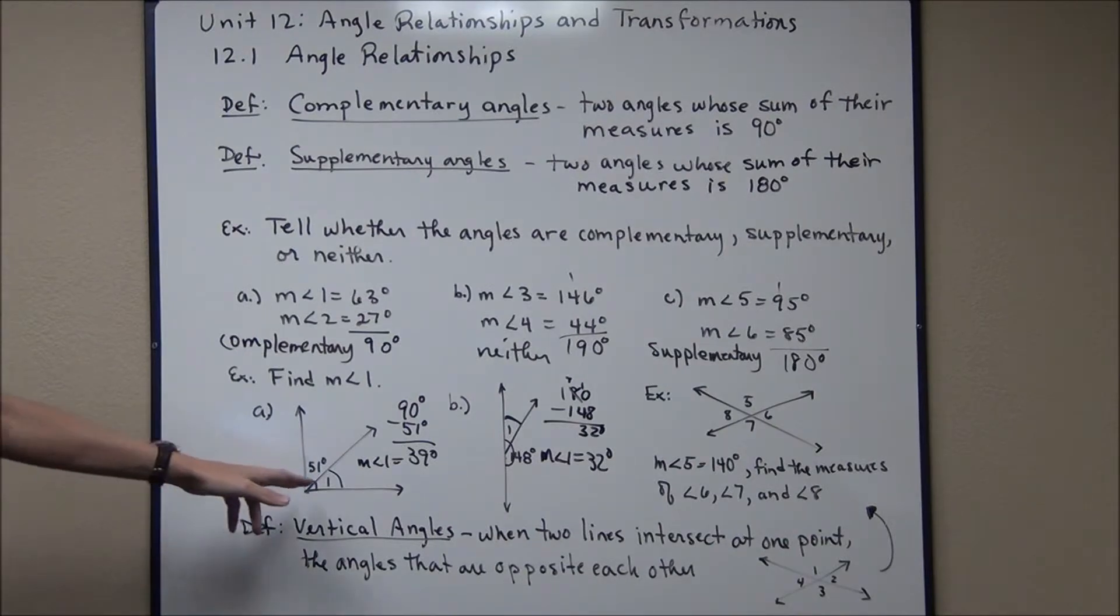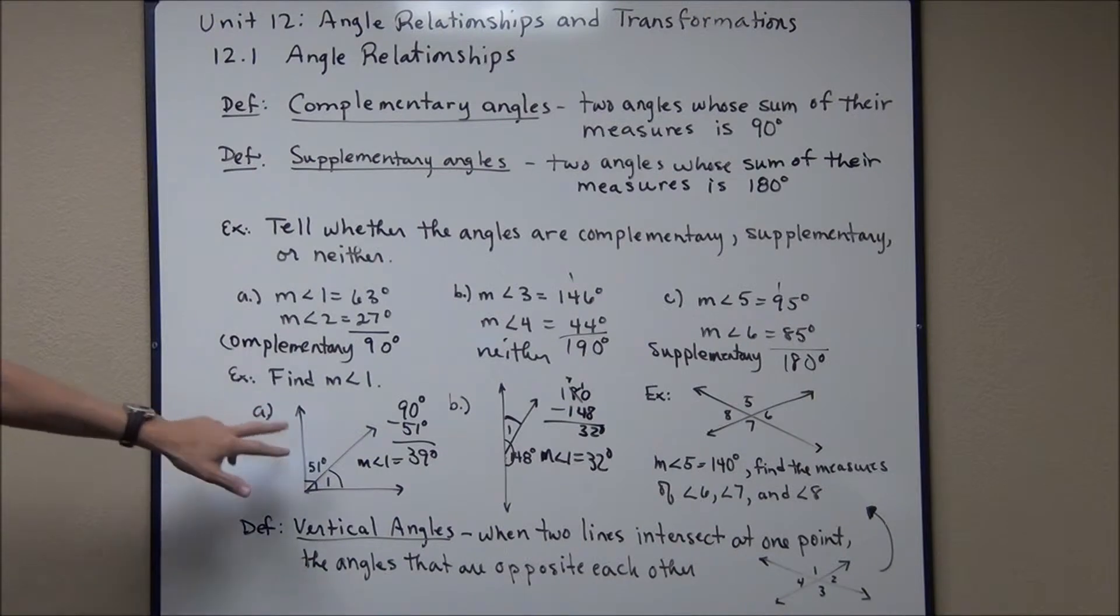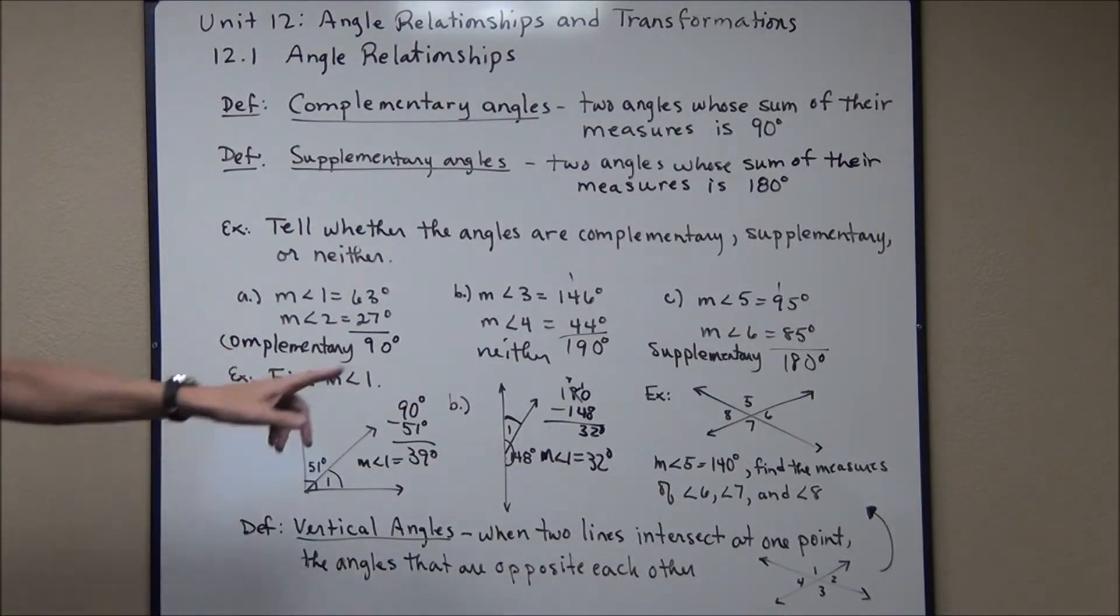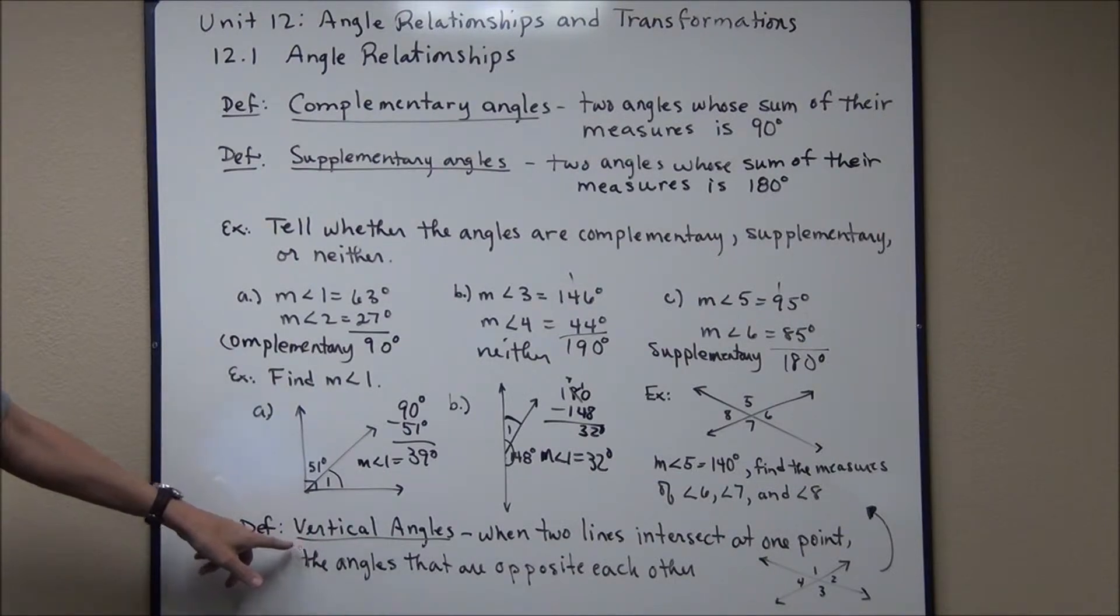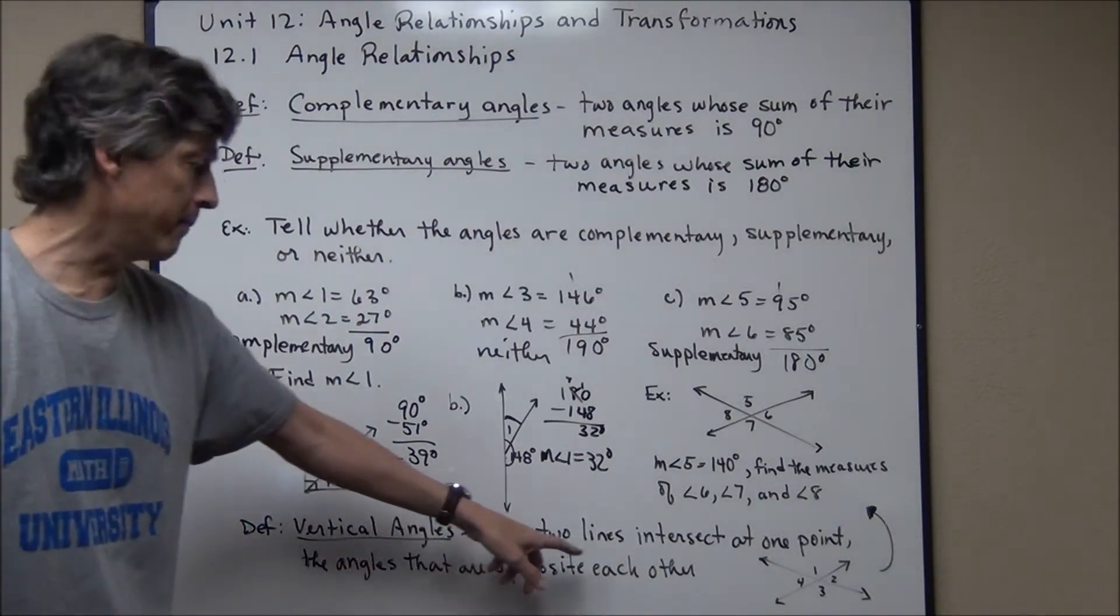So if you see this right angle or you see this line set up, you know you're talking about two angles that add up to 90 or two angles that add up to 180. Now, the last example actually goes with this definition here of what vertical angles are. Vertical angles are when two lines intersect at a point, the angles that are opposite of each other.